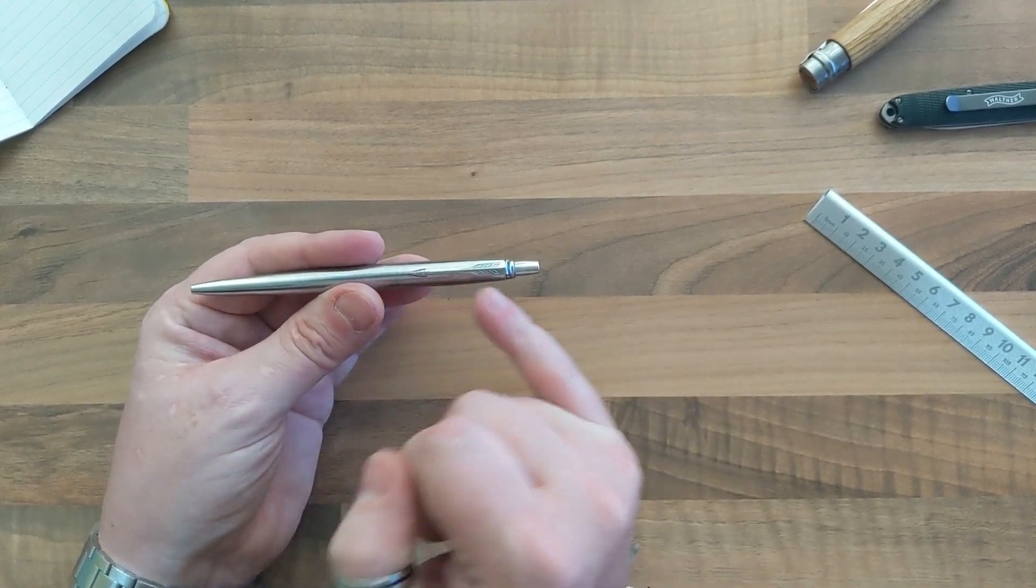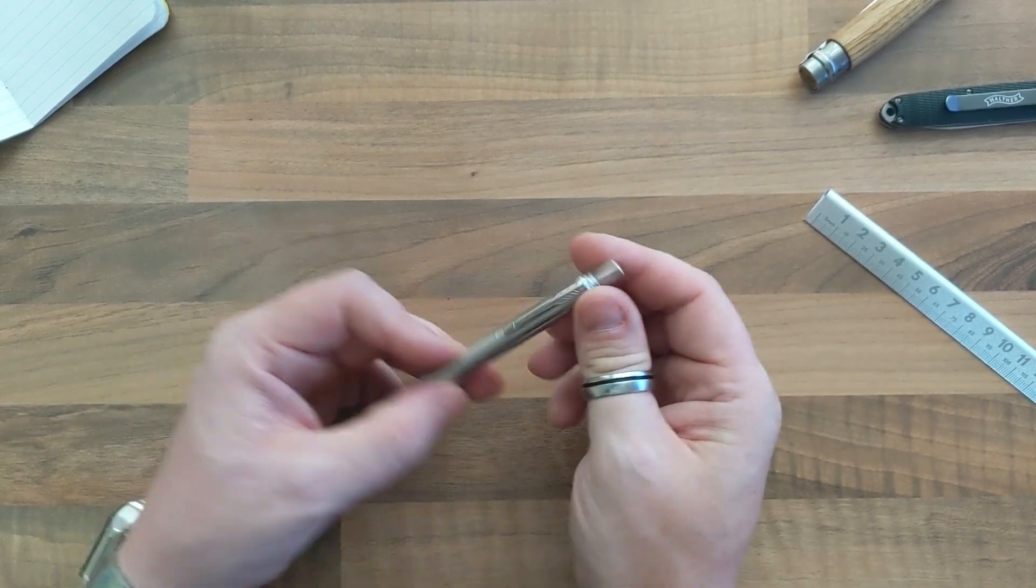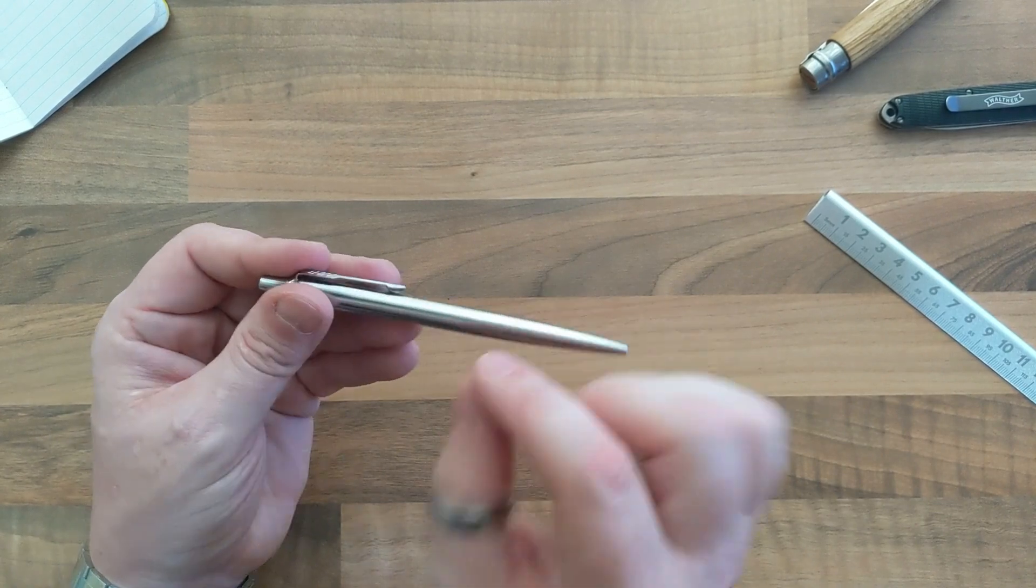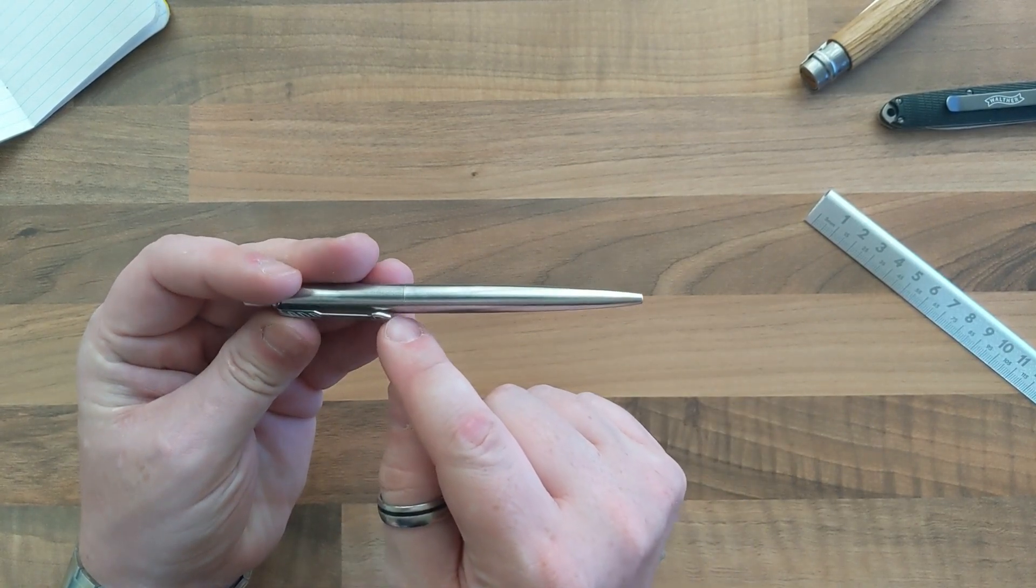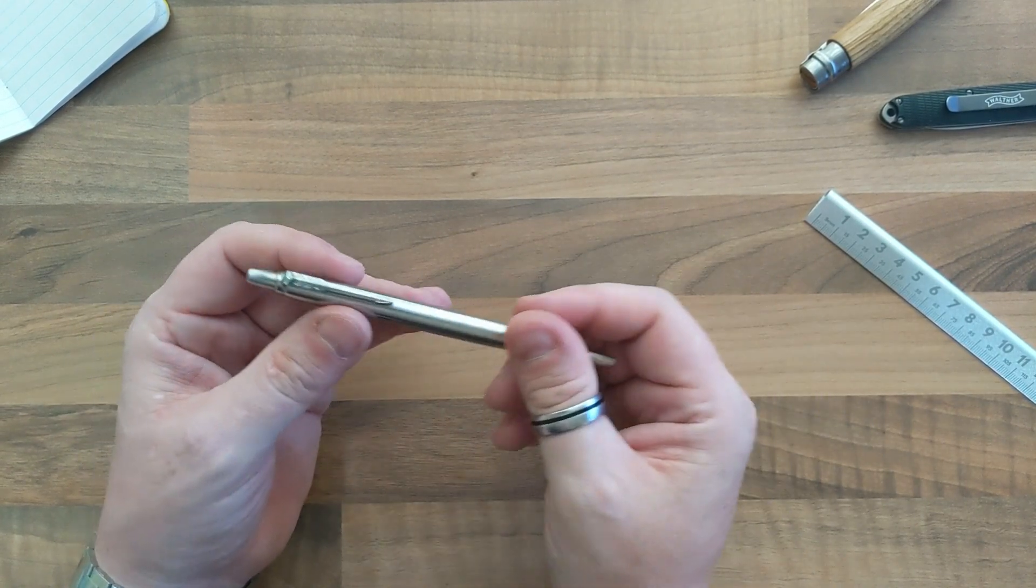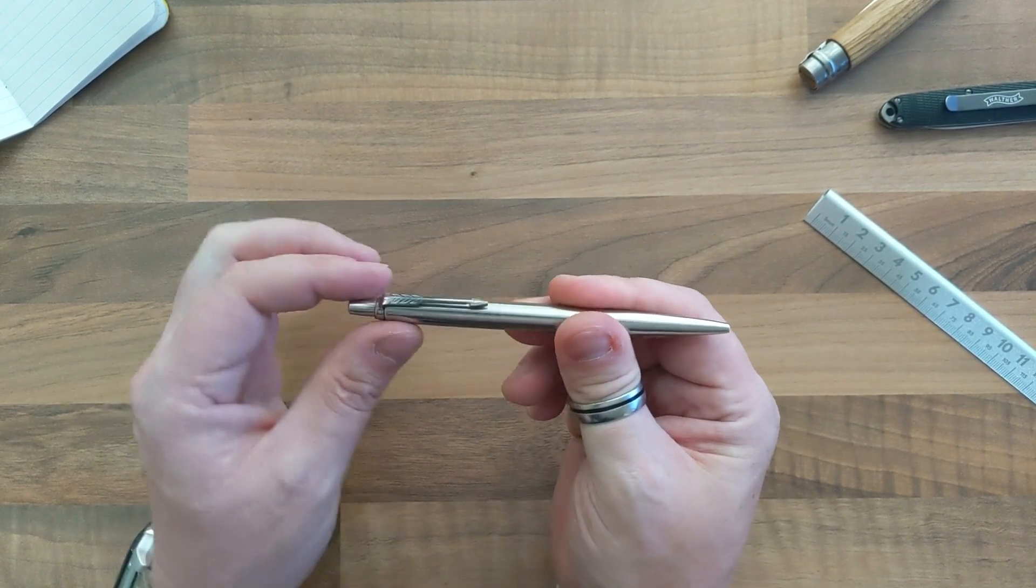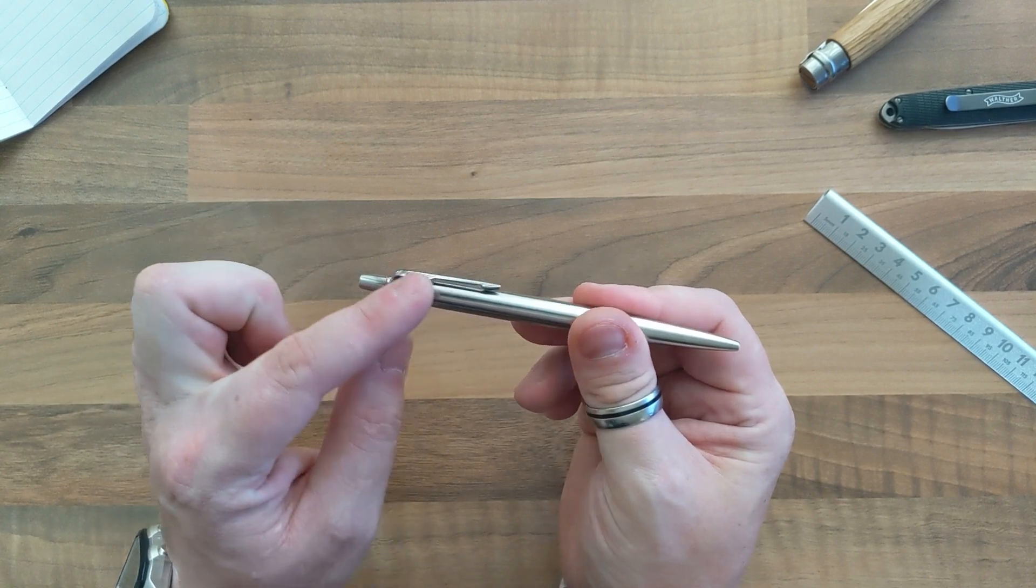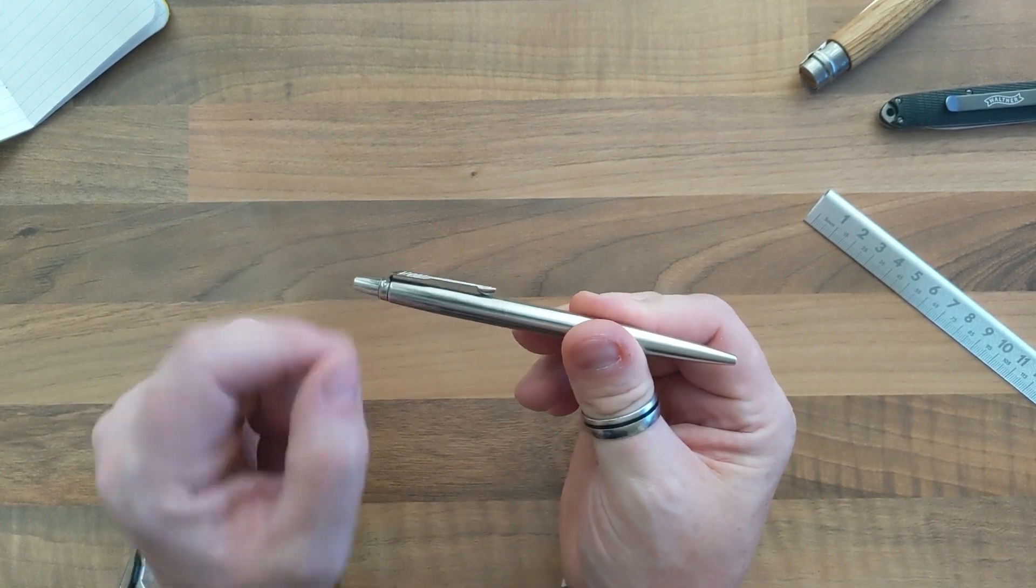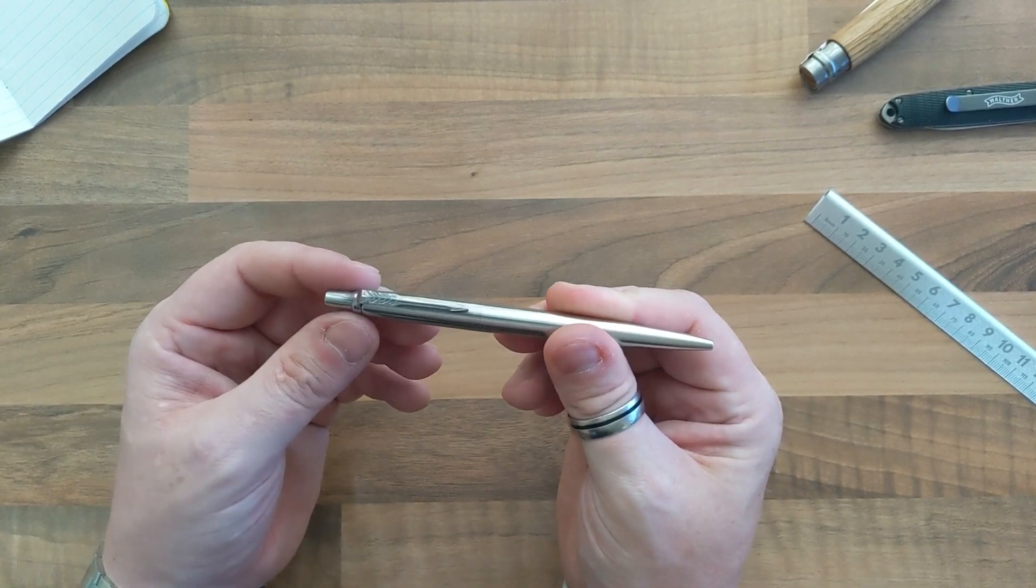One of the things that you'll always know that it's a Parker pen: one, the top half of the barrel here says Parker around it, and two, this is a trademarked pen clip. So the arrow that's on the top of here is trademarked by Parker pen.